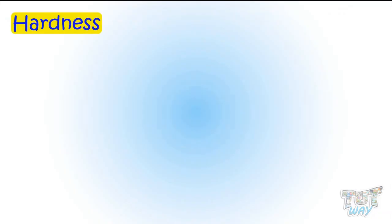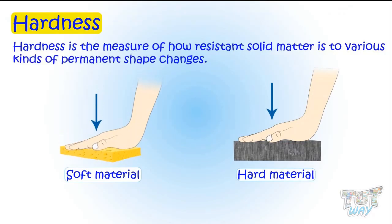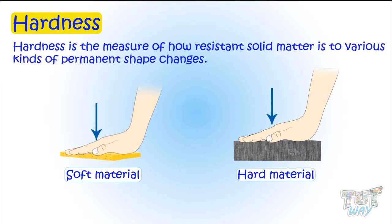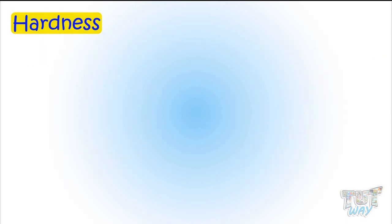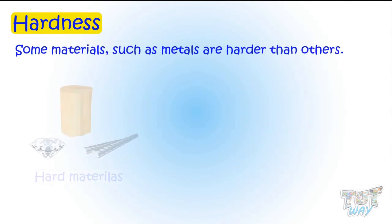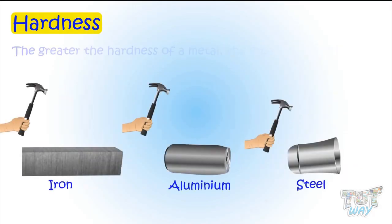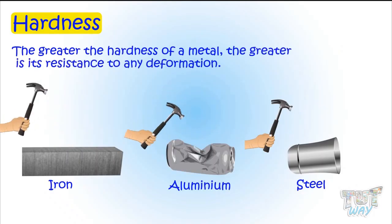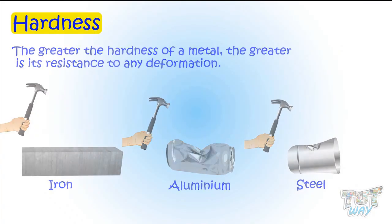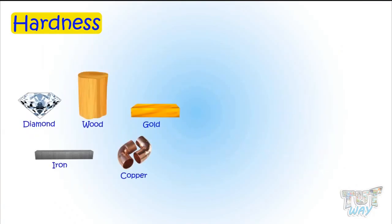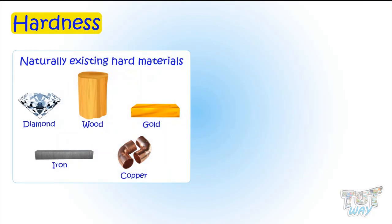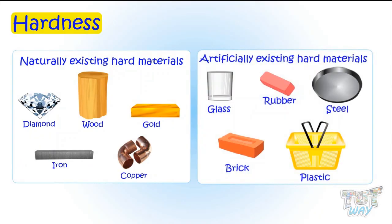Now let's learn another property of matter, which is hardness. Hardness is the measure of how resistant solid matter is to various kinds of permanent shape changes. Some materials, such as metal, are harder than others. The greater the hardness of the metal, the greater is its resistance to any deformation.